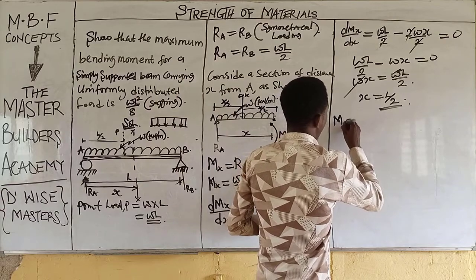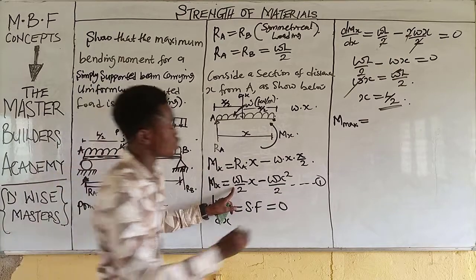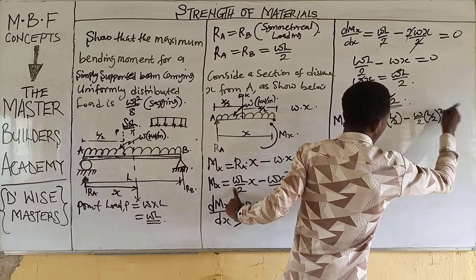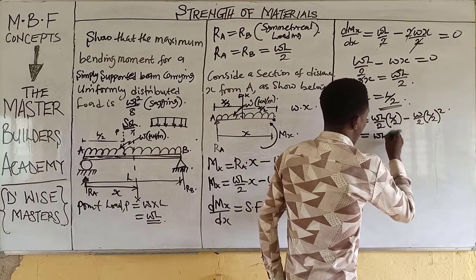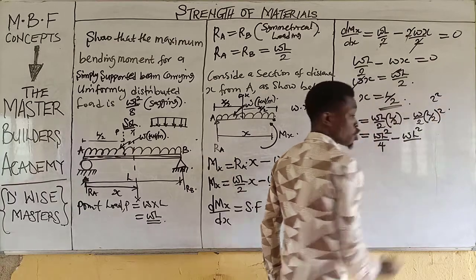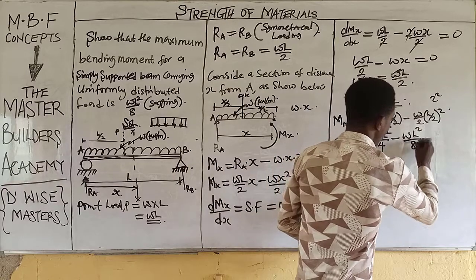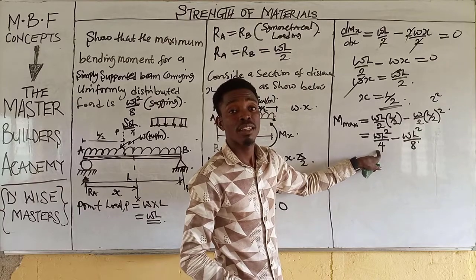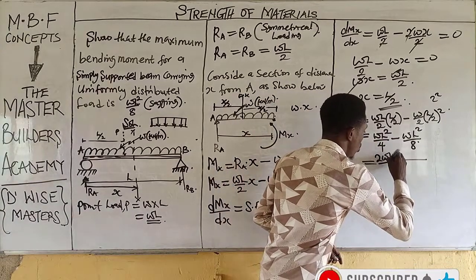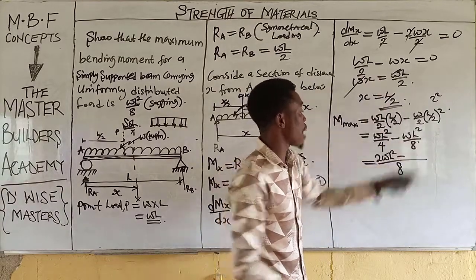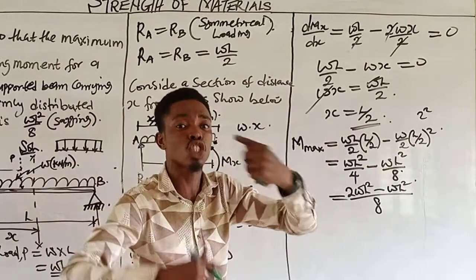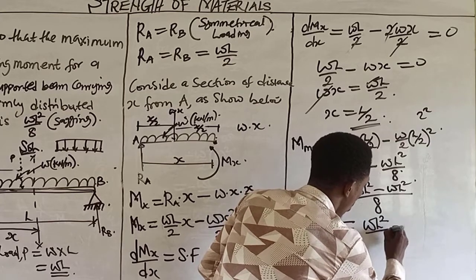Substituting X = L/2 into the moment equation: M_max = (WL/2)·(L/2) − (W/2)·(L/2)². This gives WL²/4 − WL²/8. The LCM of 4 and 8 is 8, so: M_max = 2WL²/8 − WL²/8 = WL²/8. This is the maximum bending moment. For a simply supported beam, we have positive (sagging) moments.